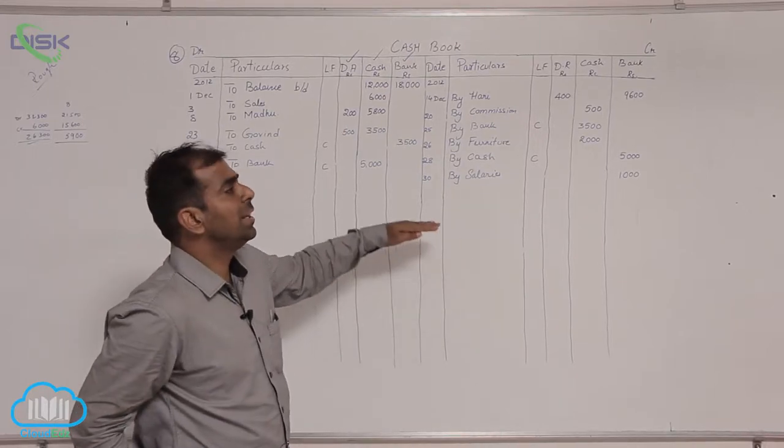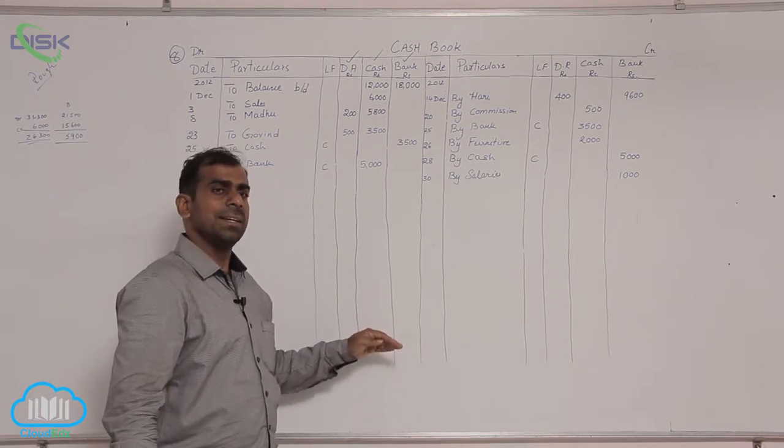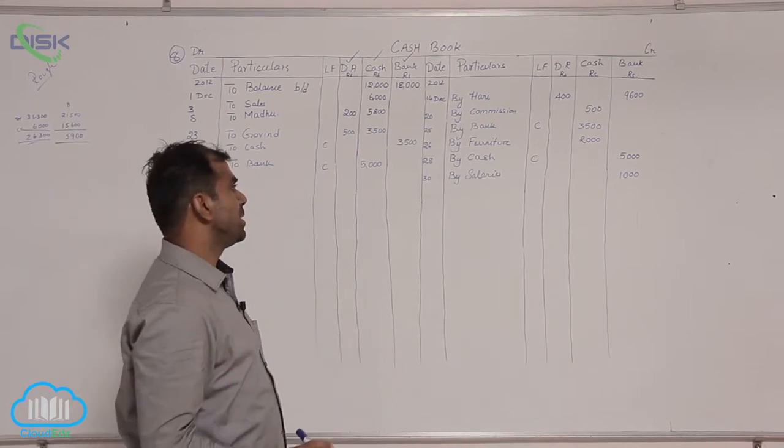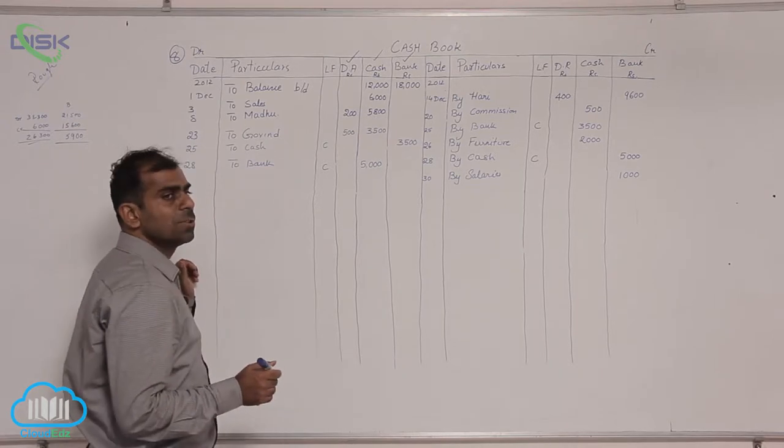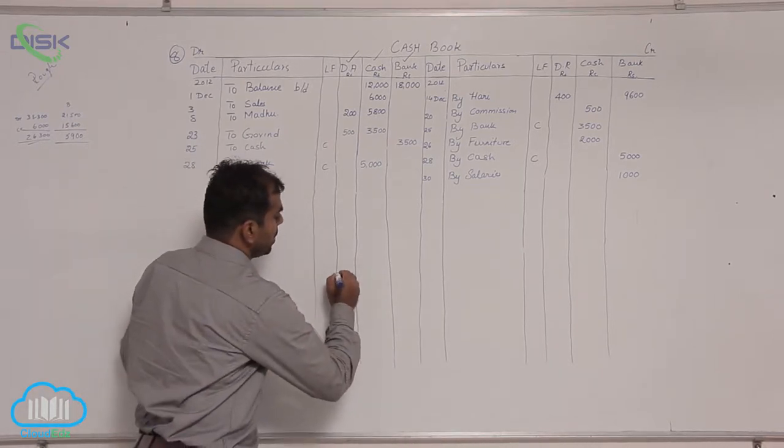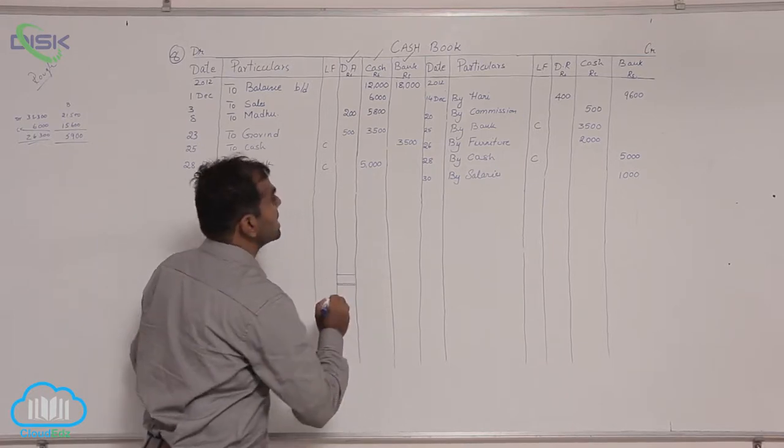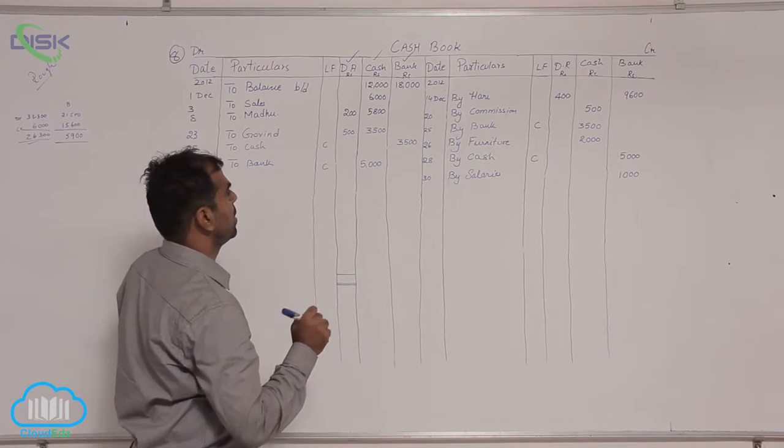You have seen we have entered all the transactions. Now the next step is to close down the cash book. First, as you remember, we have to close the discount column. The rule for closing the discount column is we have to just total them and leave it, no balancing for discount column.